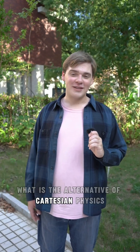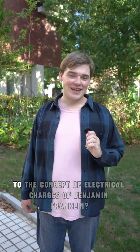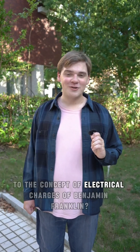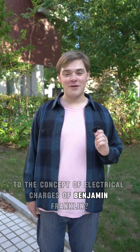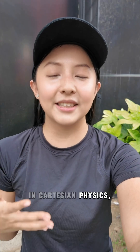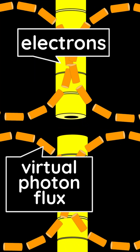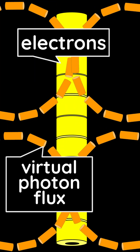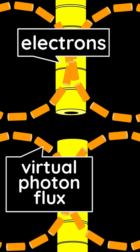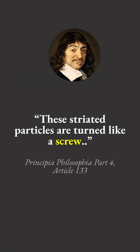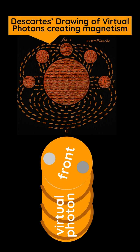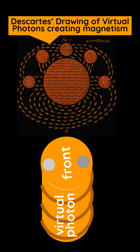What is the alternative of Cartesian physics to the concept of electrical charges of Benjamin Franklin? In Cartesian physics, magnetic forces are caused by striated particles, which are now called virtual photons. These striated particles are turned like a screw and rotate anticlockwise, transferring their force through their right-handed threads.